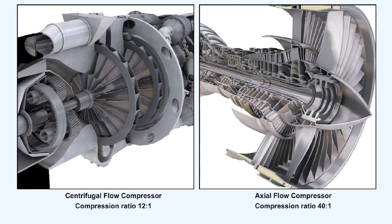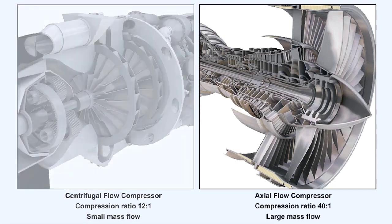Axial flow compressors have several advantages over the centrifugal compressor. For instance, whereas the centrifugal compressor compression ratio is limited to approximately 12 to 1 when the maximum of two stages are used in series, by adding more stages to an axial flow compressor, compression ratios as great as 40 to 1 can be obtained. The term compression ratio refers to the ratio of the pressure at the outlet of a compressor to that at its inlet. A second advantage is that the mass flow achievable through an axial flow compressor is potentially much greater than through a centrifugal compressor. As a consequence, development of early centrifugal compressor engines was subjugated in favor of advancement of the axial flow compressor engines, which continues today.